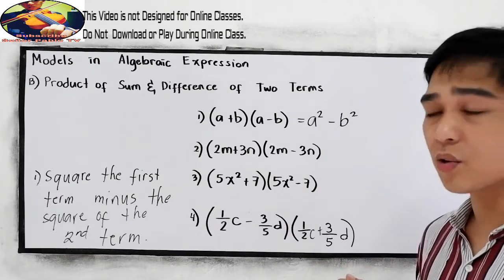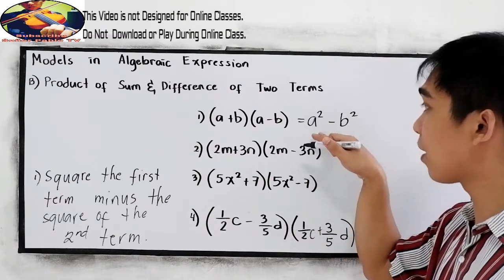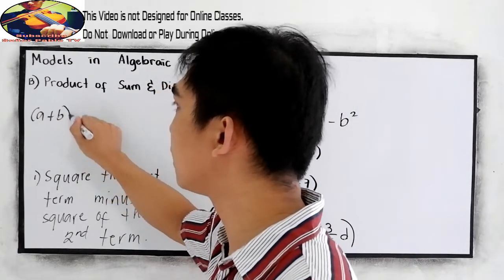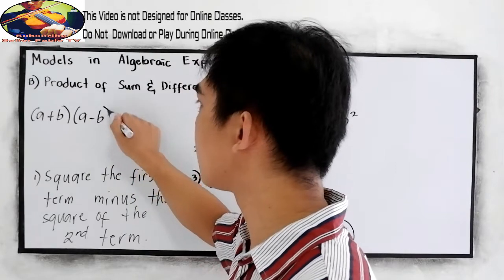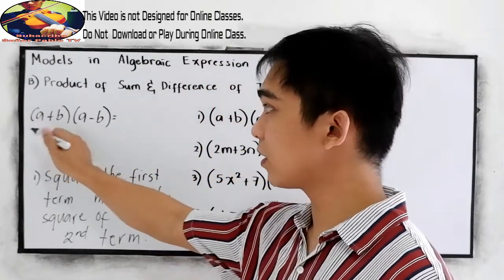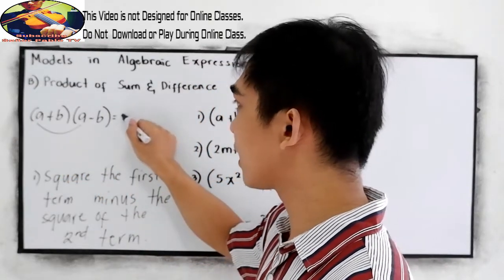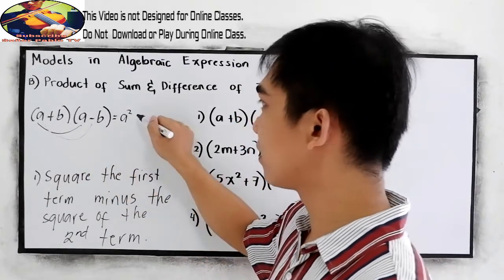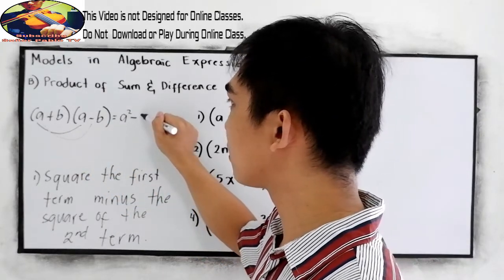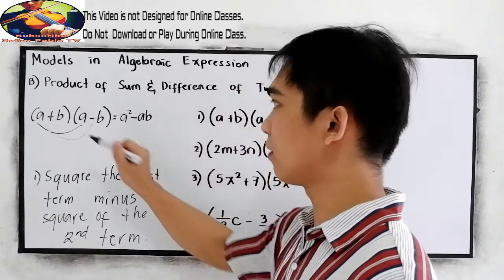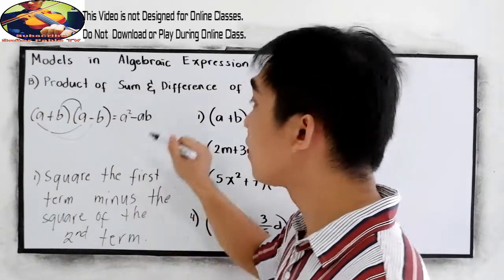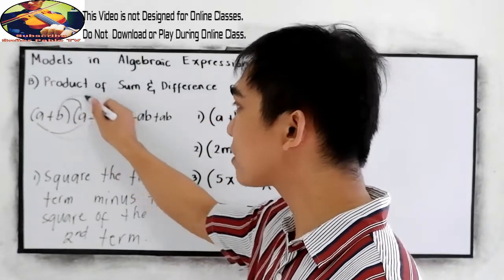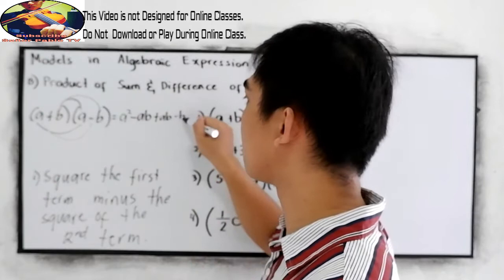So let us check using our FOIL method if we will come up with the same answer. So if we have A plus B times A minus B, using the FOIL method, A times A, that is A squared. A times negative B, that is negative AB. B times A, positive AB. And B times negative B, negative B squared.